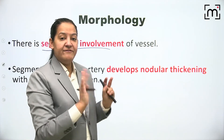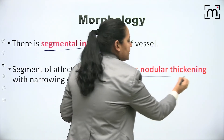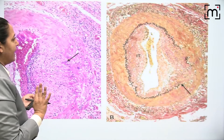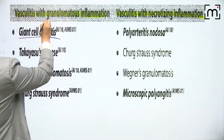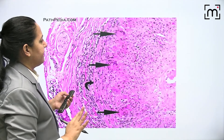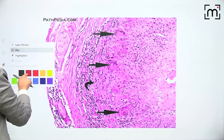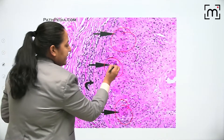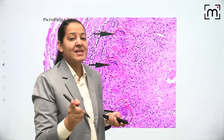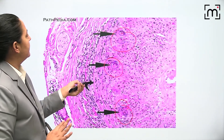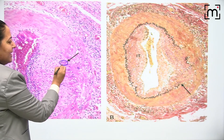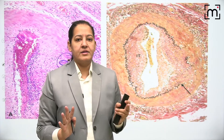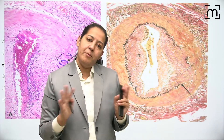Because of inflammation of the temporal artery wall, the artery develops nodular thickening - if you palpate the temporal artery you can feel it like a thick rod. Morphologically, granulomatous inflammation is noted. On biopsy you can appreciate granulomas with giant cells inside them. Both foreign body type and Langhans type giant cells are seen in the granulomas.